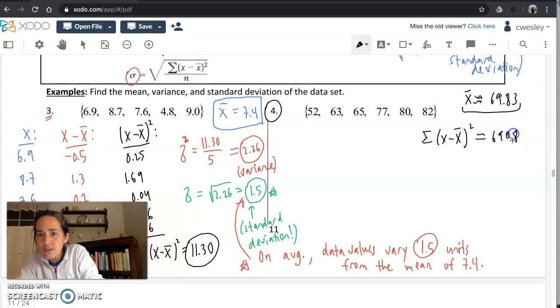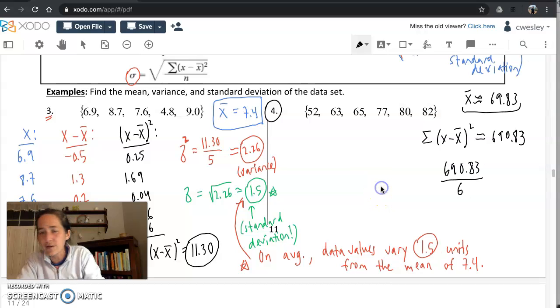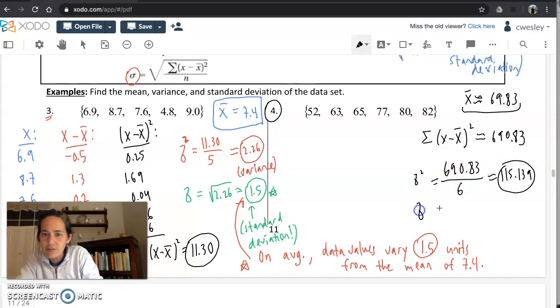And now I'm almost done those steps. I want to take this and divide it by the number of values in the list. So 690.83, the steps tell me, divided by, and let me get this right, six values in the list. So 690.83 divided by six. This gives you variance. Sigma squared is going to be over 115. So sigma squared, the variance, is going to be about 115.139. And lastly, sigma, standard deviation. Standard deviation is going to be the square root of that, square root of 115.139. I'll square root it in my calculator. And you're going to get 10.73 units.